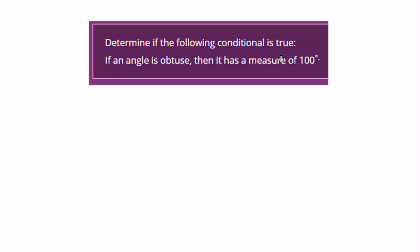Determine if the following conditional is true: If an angle is obtuse, then it has a measure of 100 degrees.